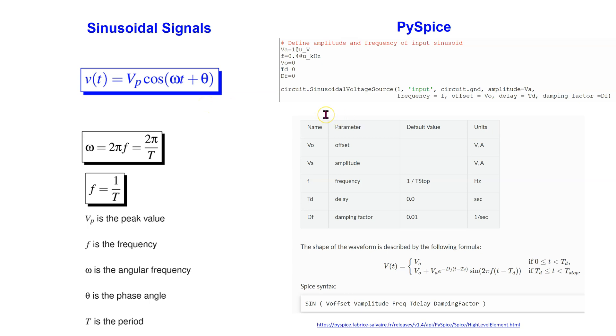In PySpice, the circuit dot sinusoidal voltage source command can be used to generate a sinusoidal voltage. This command accepts the amplitude and frequency as input along with other parameters such as offset voltage, time delay, and damping factor. We only need to define the amplitude and frequency and the remaining parameters can be set to zero. Note that the phase angle theta is not available as a parameter in this circuit element.